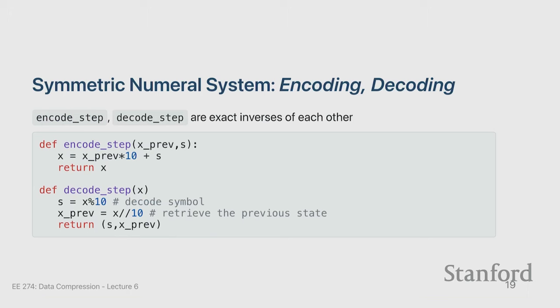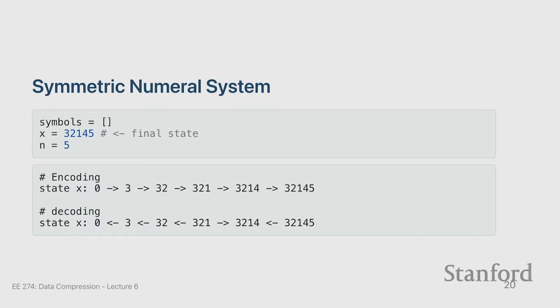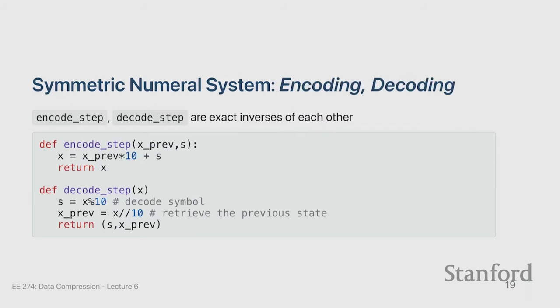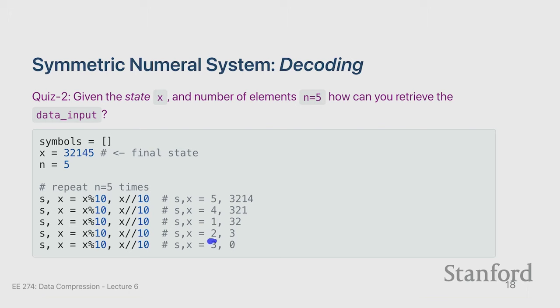Writing this as formal encode and decode steps: you maintain a state. During encoding, when you receive a symbol, you multiply the previous state by 10 and add the symbol. During decoding, you start with state X, decode the symbol by taking modulo 10, and update the state by integer division by 10. The decode step returns both the symbol and the state. The symbols are recovered in opposite order: encoding went 3, 2, 1, 4, 5 but decoding returns them in reverse.